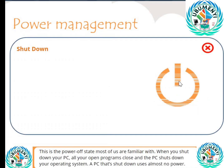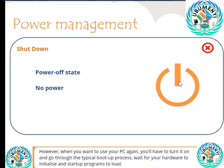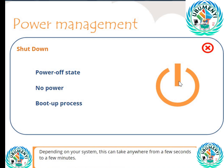Shut down: This is the power-off state most of us are familiar with. When you shut down your PC, all your open programs close and the PC shuts down your operating system. A PC that's shut down uses almost no power. However, when you want to use your PC again, you will have to turn it on and go through the typical boot-up process — wait for your hardware to initialize and start-up programs to load. Depending on your system, this can take anywhere from a few seconds to a few minutes.